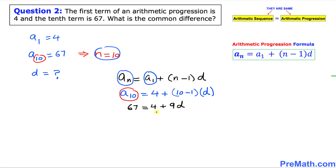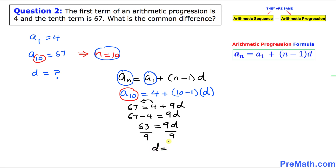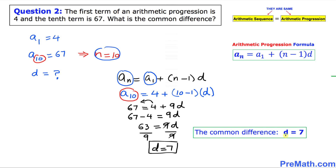Let's move the 4 to the other side. This becomes 67 minus 4 equals 9d, so 63 equals 9d. We want to isolate d, so we divide both sides by 9. This gives us d equals 7. Thus, our common difference turns out to be 7, and that is our answer.